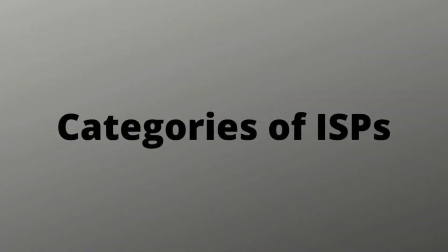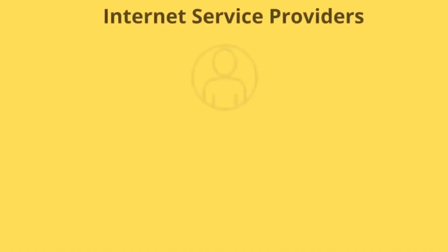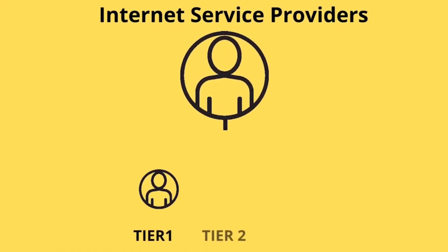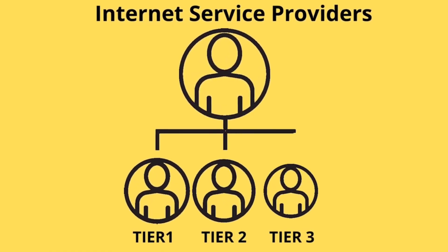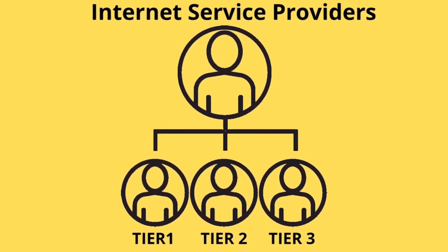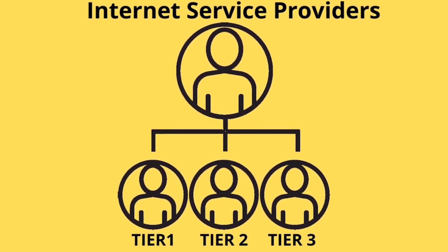As you have got the clear idea about what are ISPs and what they do, now let's understand the different categories of ISPs. There are namely three categories in ISPs: Tier 1 ISP, Tier 2 ISPs, and Tier 3 ISPs.